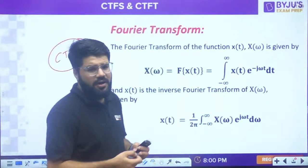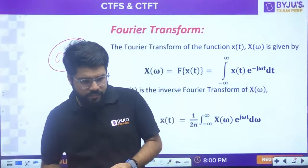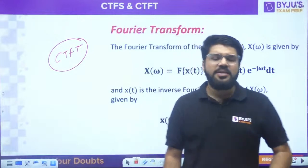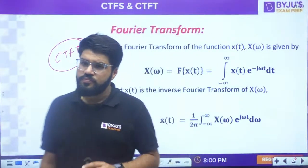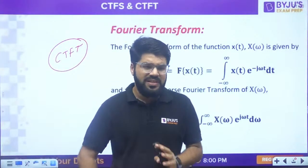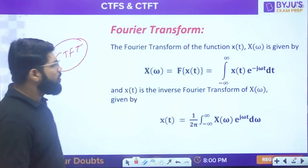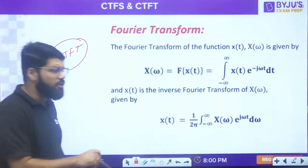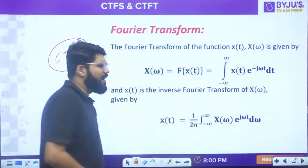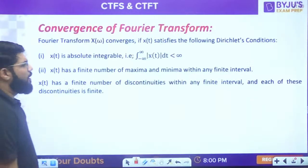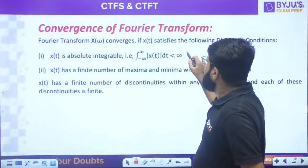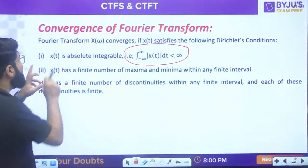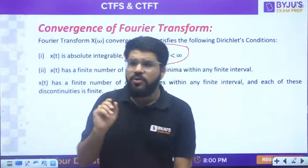We all know the Fourier transform formula: X(ω) = integral from minus infinity to infinity of x(t) e^(-jωt) dt, and the inverse Fourier transform x(t) = (1/2π) integral of X(ω) e^(+jωt) dω. For the Fourier transform to converge, it must satisfy Dirichlet's conditions. The most important one: the signal should be absolutely integrable - that is, integral of |x(t)| dt should be finite.